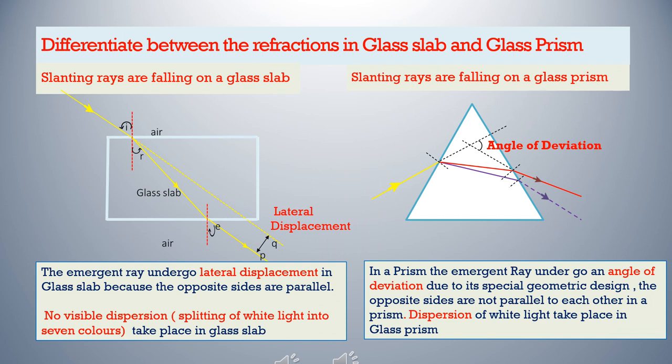Slanting rays of light falling on a glass slab as well as on a glass prism — in both cases the rays of light undergo refraction. But in the case of glass prism, we can see seven colors; the light splits into seven different colors. This is due to the difference in geometrical shapes: the opposite sides are parallel in the case of glass slab, whereas in the case of glass prism they are not parallel at all. The emergent ray undergoes lateral displacement in the case of glass slab, whereas in the case of glass prism the emergent ray undergoes an angle of deviation, and dispersion takes place. Dispersion means the splitting of white light into seven different colors — it occurs in glass prism, whereas in glass slab dispersion is not visible.